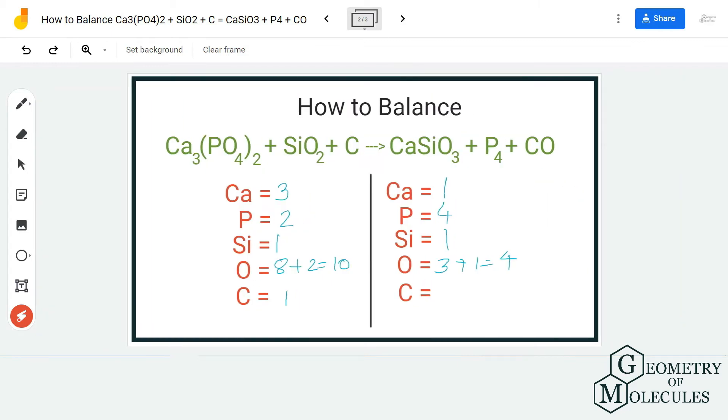For calcium we have three atoms on reactant side and one on product side. Similarly, two phosphorus atoms on reactant side, four on product side. Silicon has one atom each on both sides. For oxygen, we have eight plus two, that is ten on reactant side, and three plus one, four on product side.